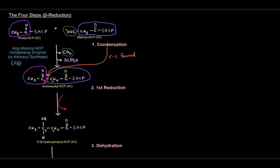The acyl-malonyl-ACP condensing enzyme takes the acyl group and condenses it with the malonyl-ACP to form this molecule. More specifically, it is a beta-ketoacyl synthase because at the beta-carbon we have a ketone. So acetoacetyl-ACP is a beta-ketoacyl-ACP — still attached to the ACP — and it will now be carried to the next catalytic site where the first reduction happens.